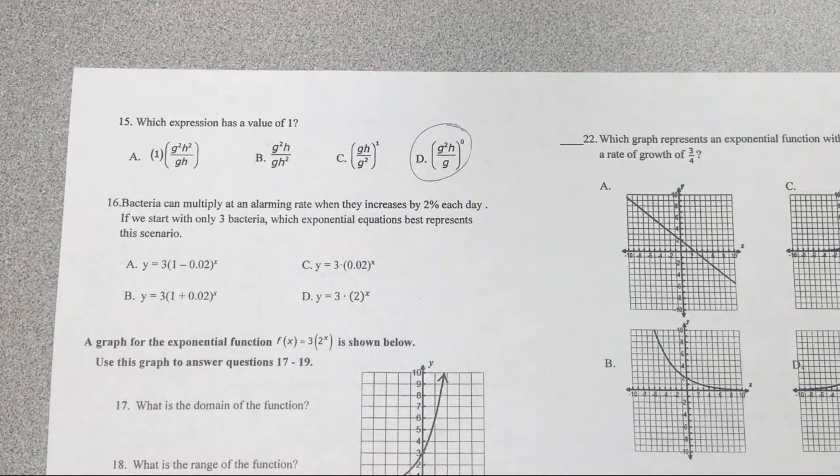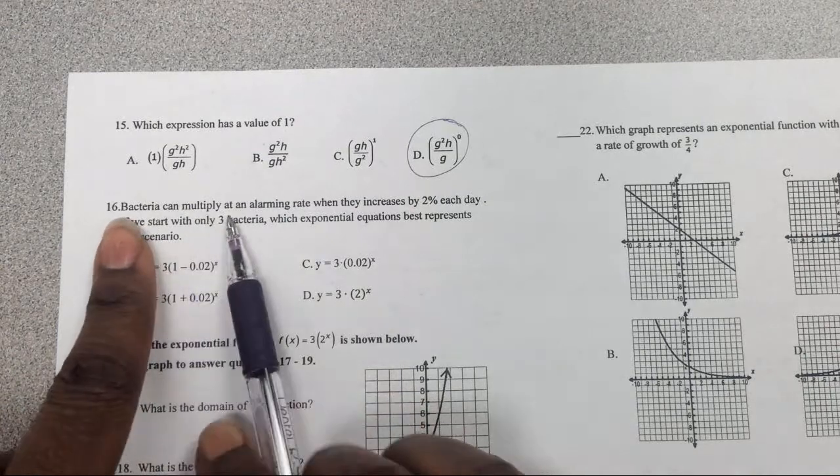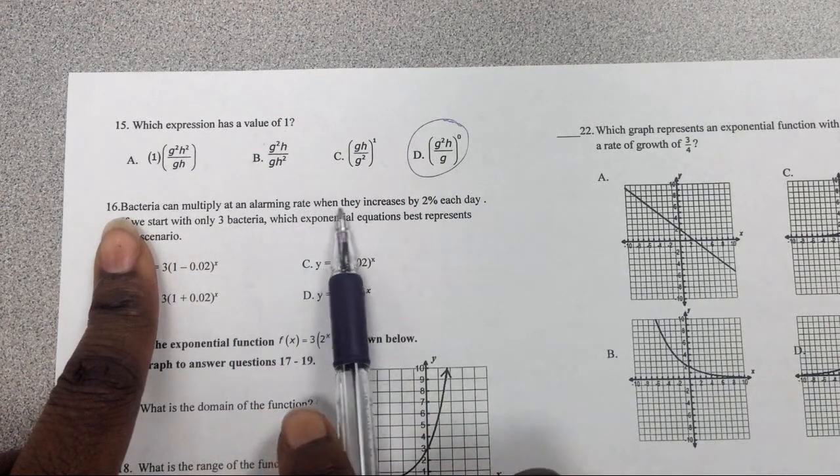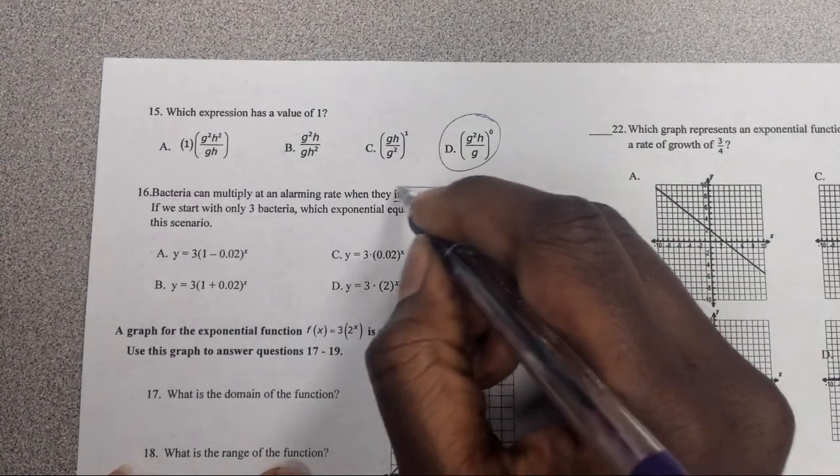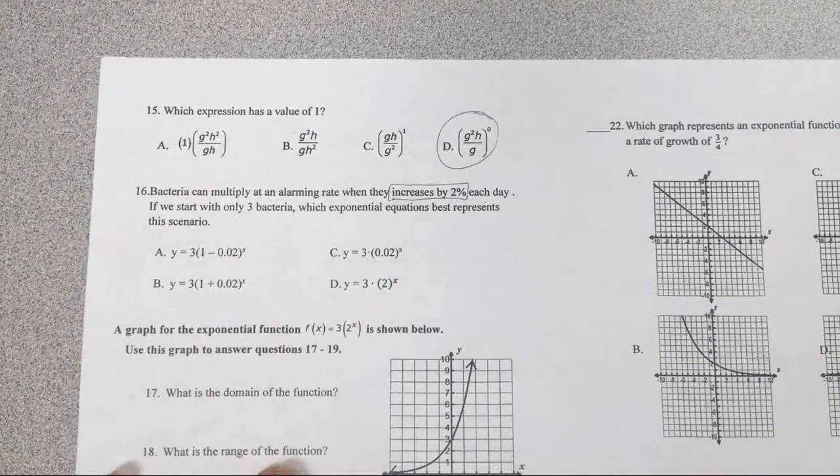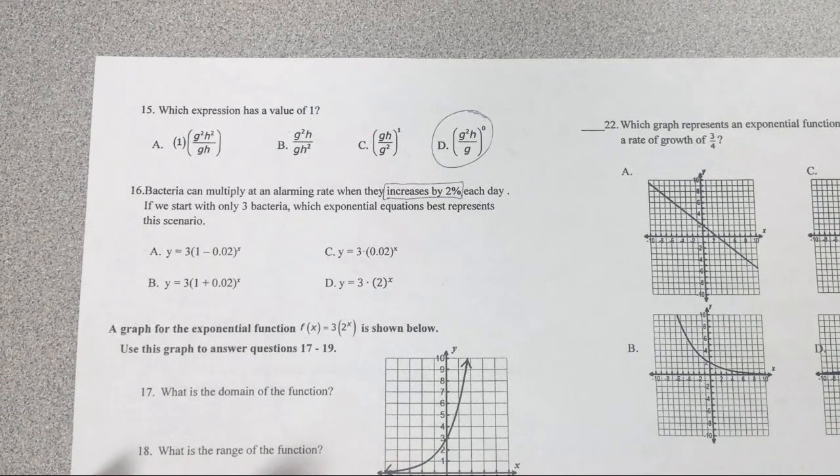The next one says bacteria can multiply at an alarming rate when they increase by 2% each day. We know it has to be increasing, and if it's increasing that means the rate has to be greater than one.